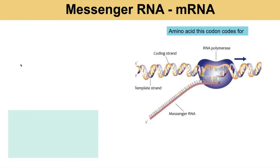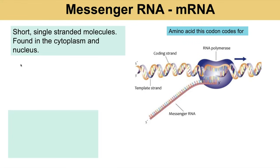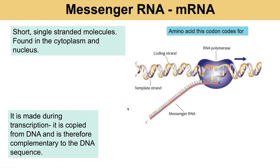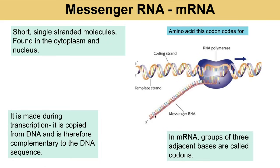Messenger RNA (mRNA) is short compared to DNA because it's only a copy of one gene, whereas the DNA is the entire genome. It's single-stranded and found in both the cytoplasm and the nucleus. It is made during transcription in the nucleus, and once it's been modified it leaves the nucleus and enters the cytoplasm to attach to a ribosome. Three bases on mRNA are called codons, which can code for a particular amino acid.